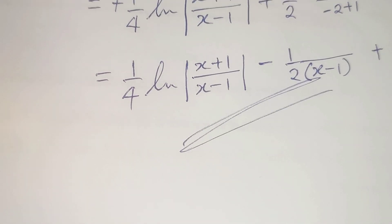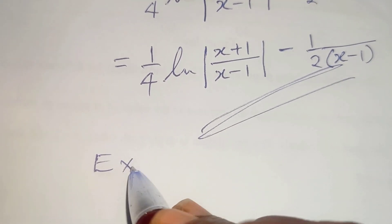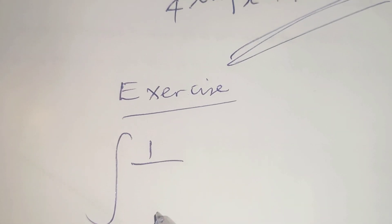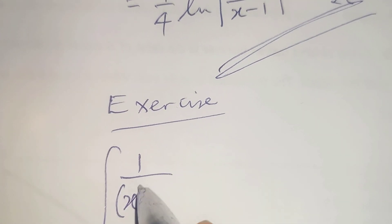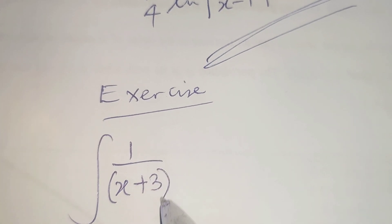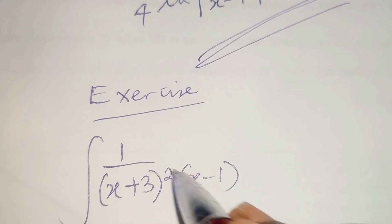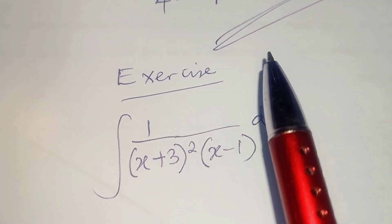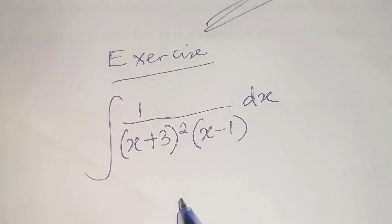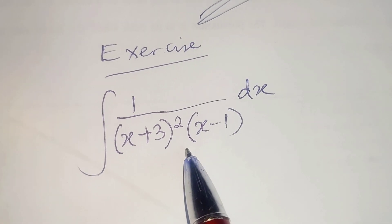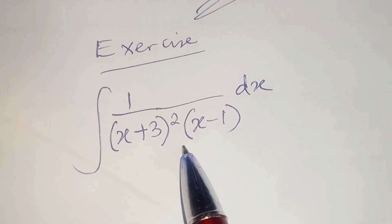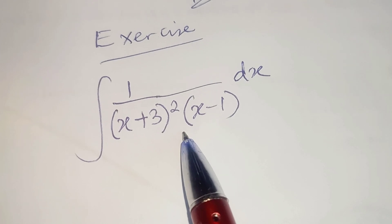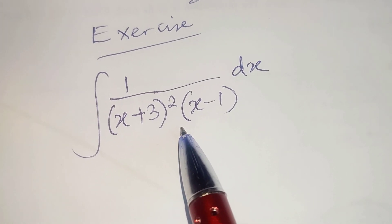You can practice with this exercise: find the value of the integral of 1 over (x plus 3) squared times (x minus 1) dx. Try to solve it by following the same steps we took just now. Put your result in the comments section and I will be glad to reply. Thank you for watching — please like, share, and subscribe for more interesting videos.